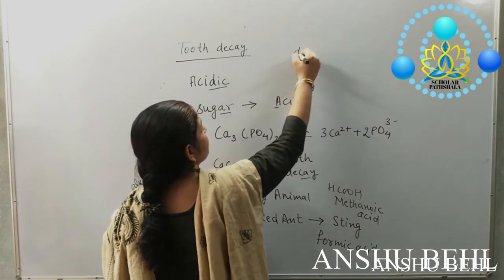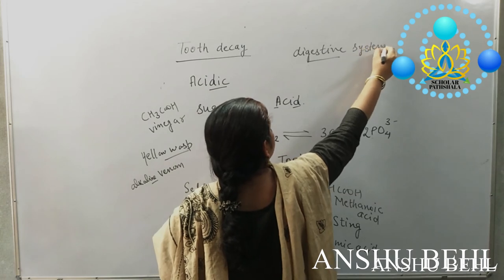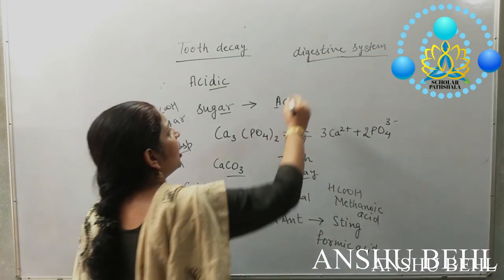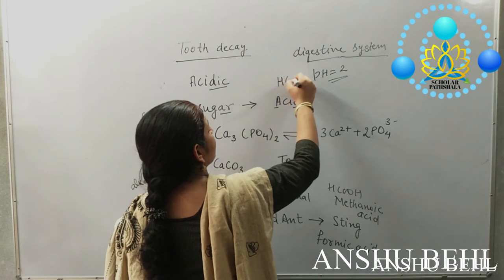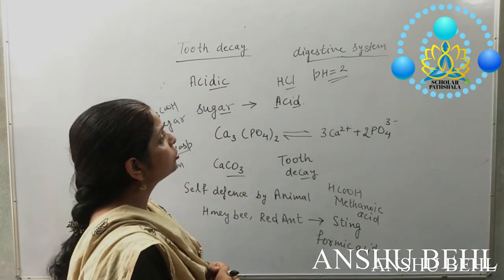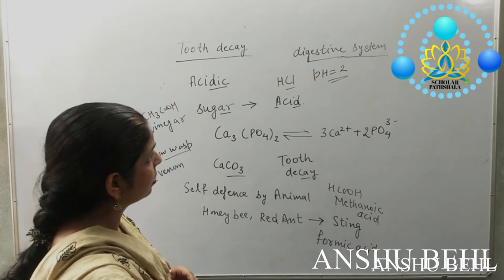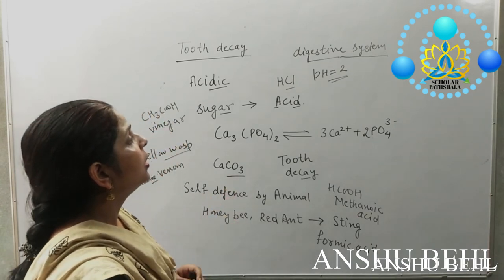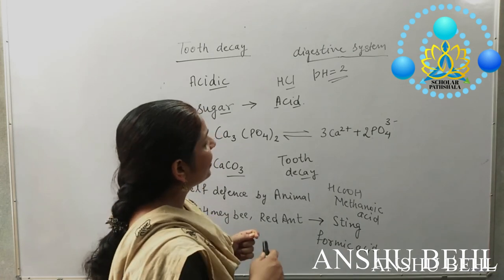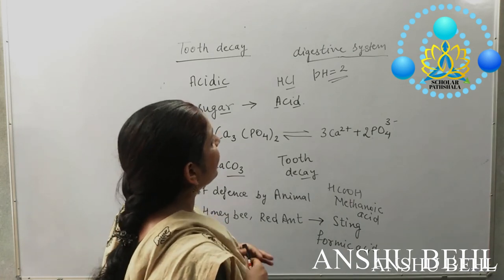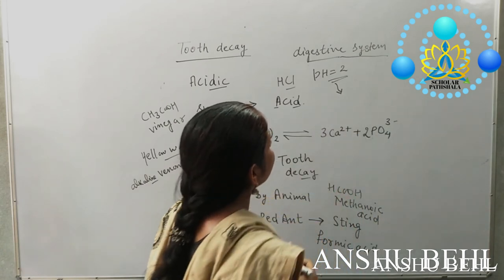In our digestive system, pH also plays an important role. The stomach releases HCl, making its pH very low. A layer of mucus prevents the acid from reacting with the inner lining of the stomach. This acidic pH also kills any harmful microorganisms that enter the body. When food moves to the next part — the small intestine — the pH changes.